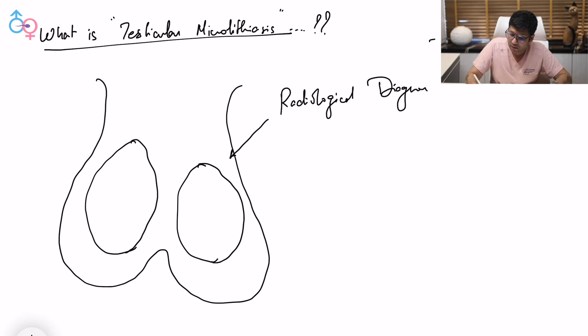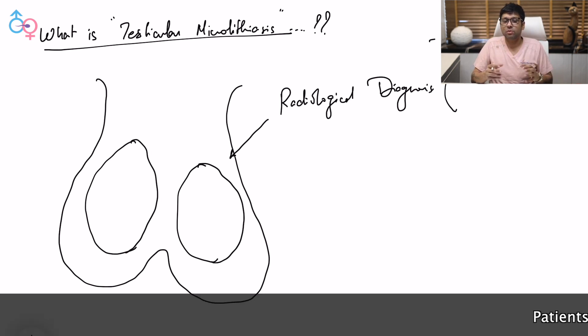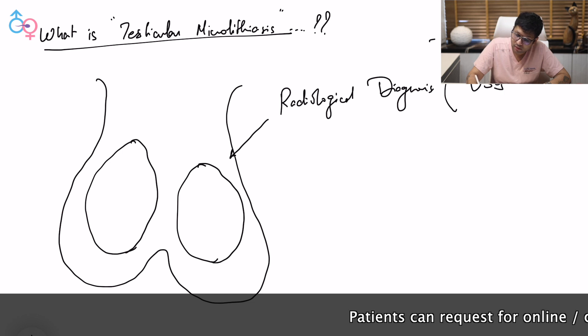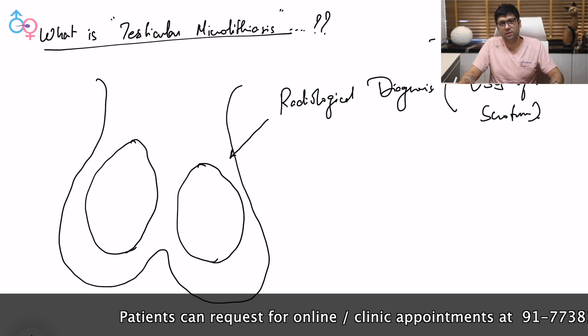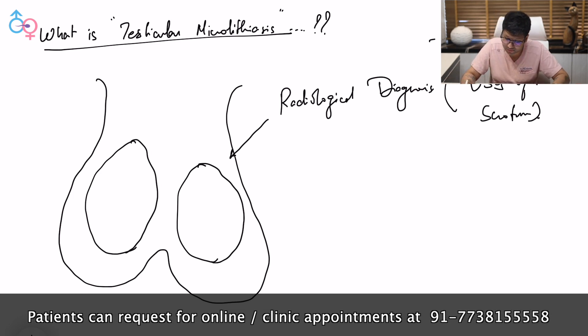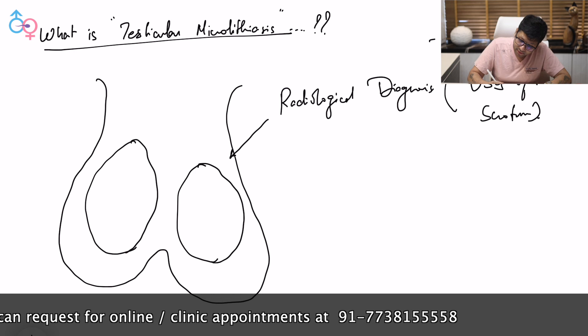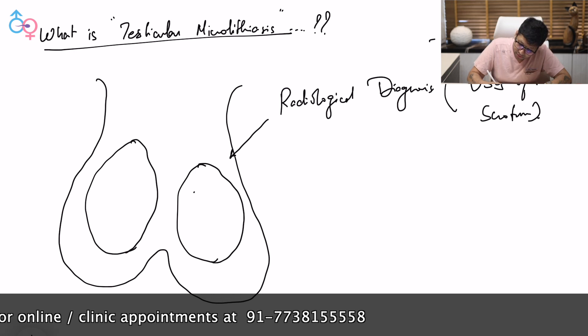That means you are going to come to know of this thing when you do a USG of the scrotum. Predominantly, more than 90% of the times, more than 99% of the times, what it is going to show is that there are going to be certain microcalcifications which are present in the testes.